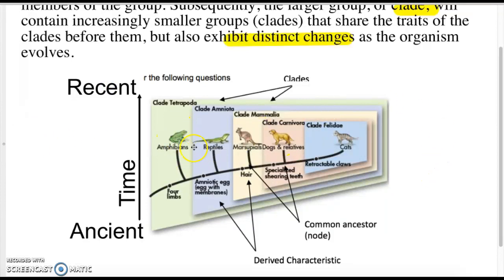When you look at these individual groups—amphibians, reptiles, marsupials, dogs, cats—each individual group is what we call a clade.